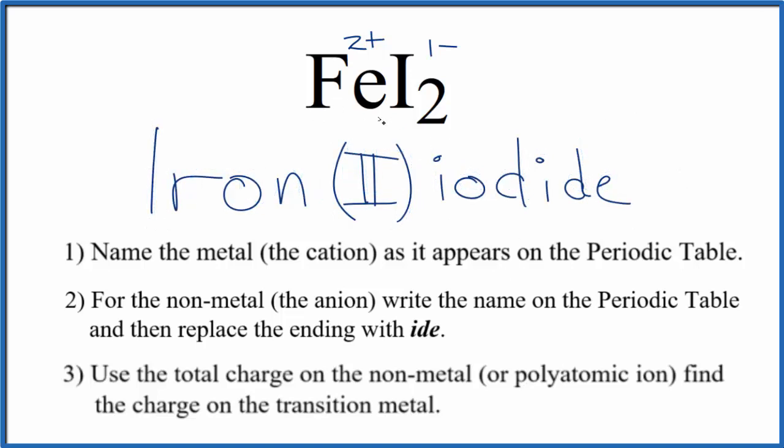That makes the name for FeI2, iron(II) iodide, and this 2 in parentheses is because of this 2 plus charge on the iron. This is Dr. B with the name for FeI2, iron(II) iodide. Thanks for watching.